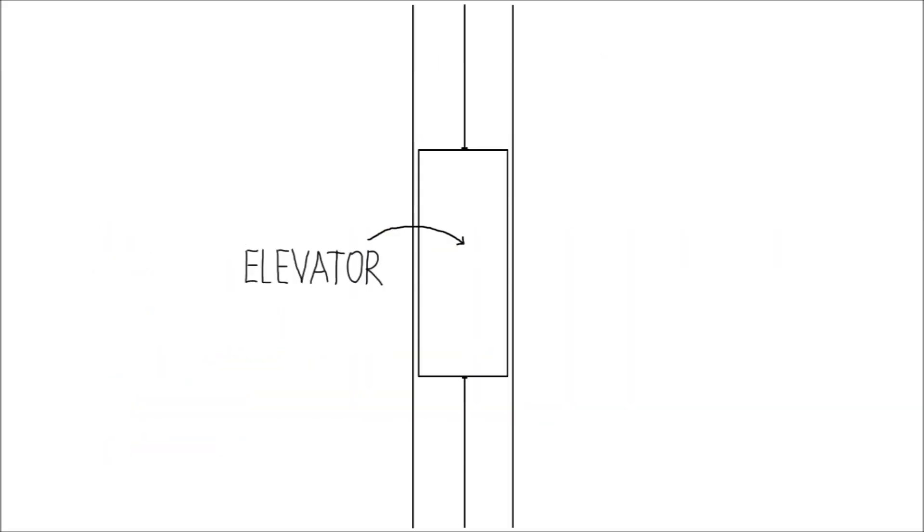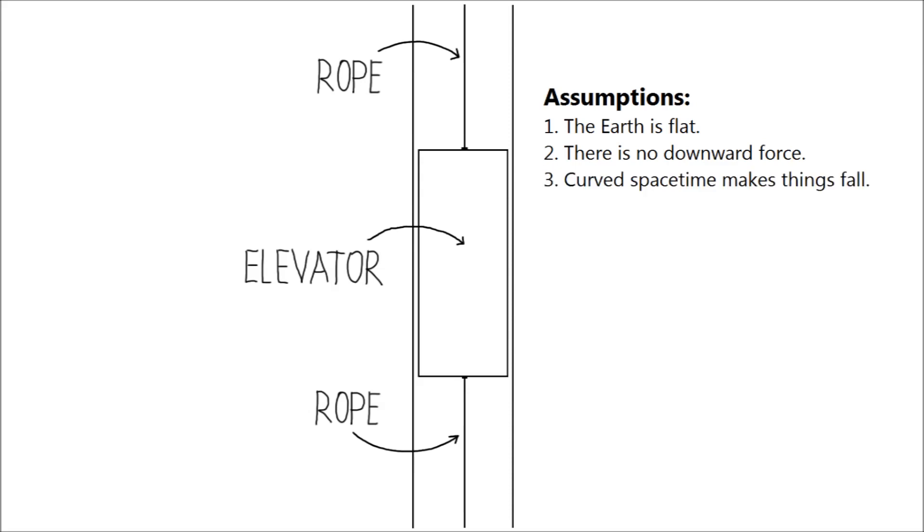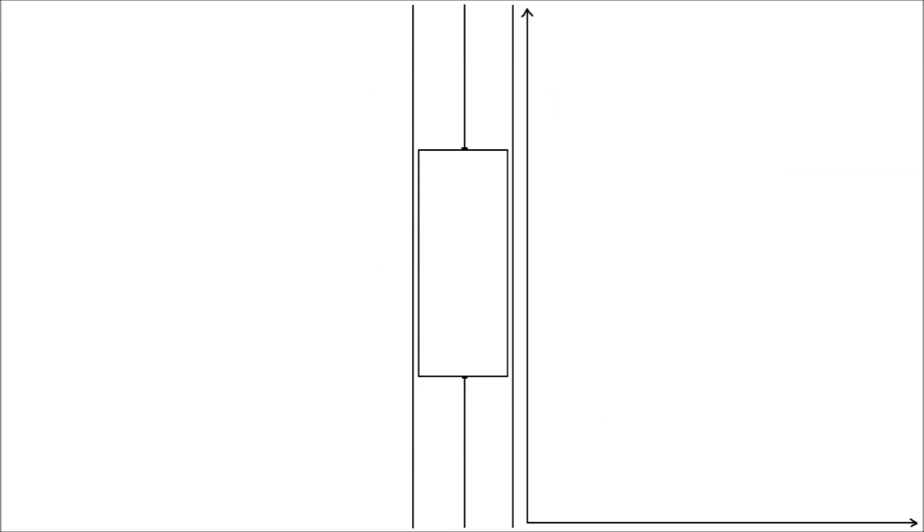Imagine an elevator close to the Earth's surface, held steady by two ropes. For simplicity, we assume that the Earth is flat. Remember that according to general relativity, there is no force that pulls things down. Instead, things fall because the spacetime is curved. And so we will investigate three cases: spacetime around the Earth is flat, only space is curved, and only time is distorted. Let's track elevator's movement on a spacetime diagram with height on the vertical axis and time on the horizontal axis.